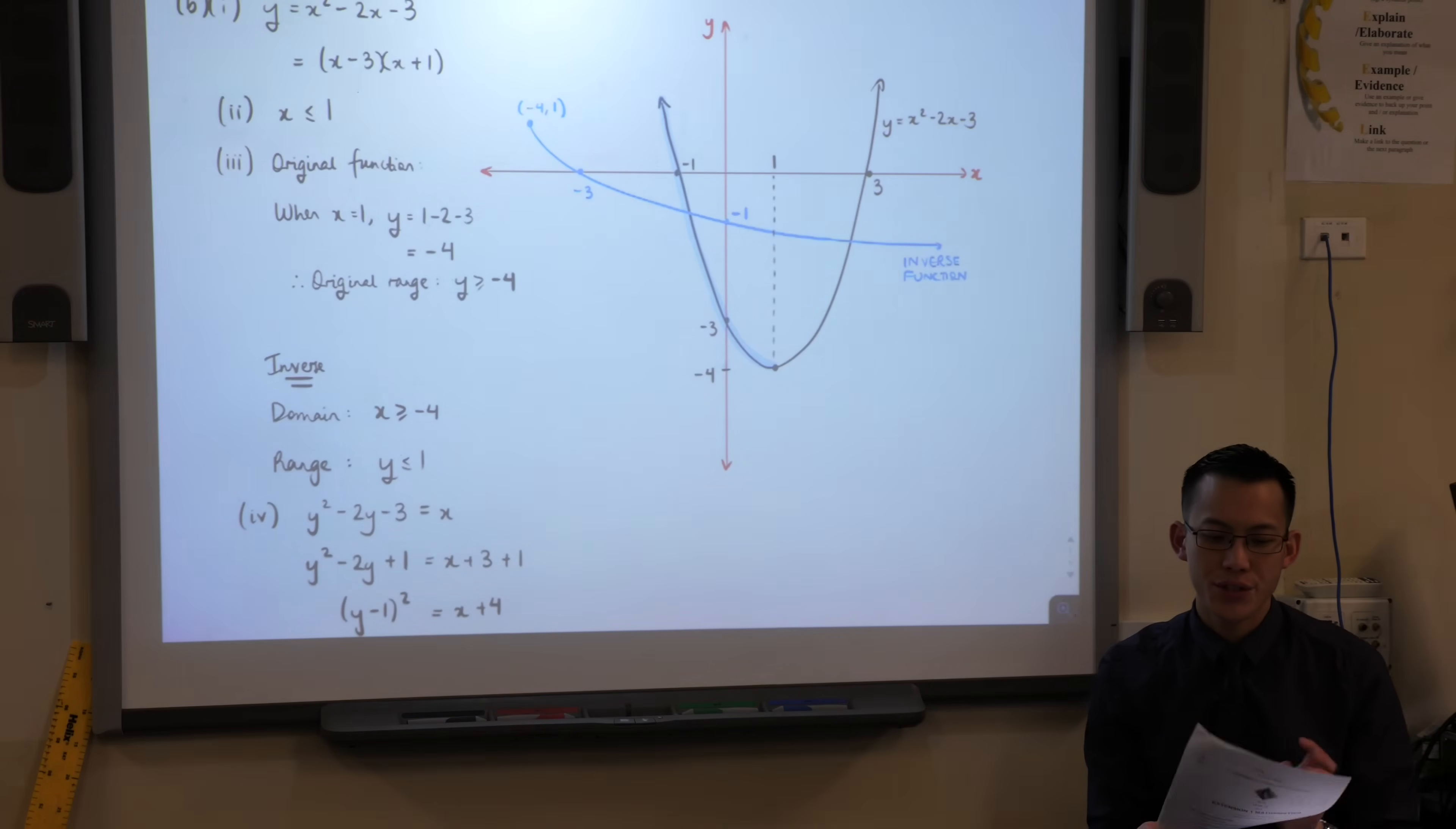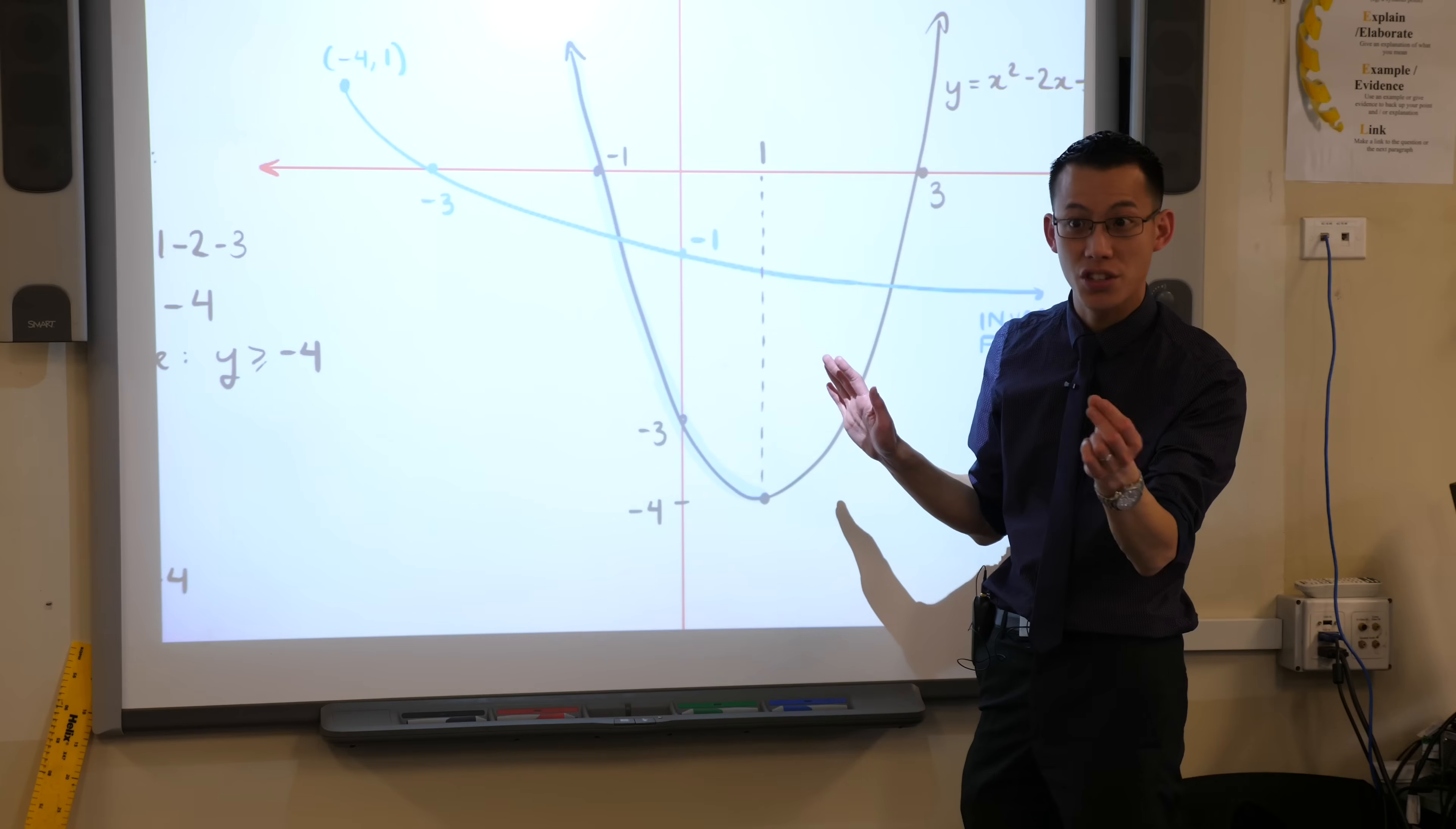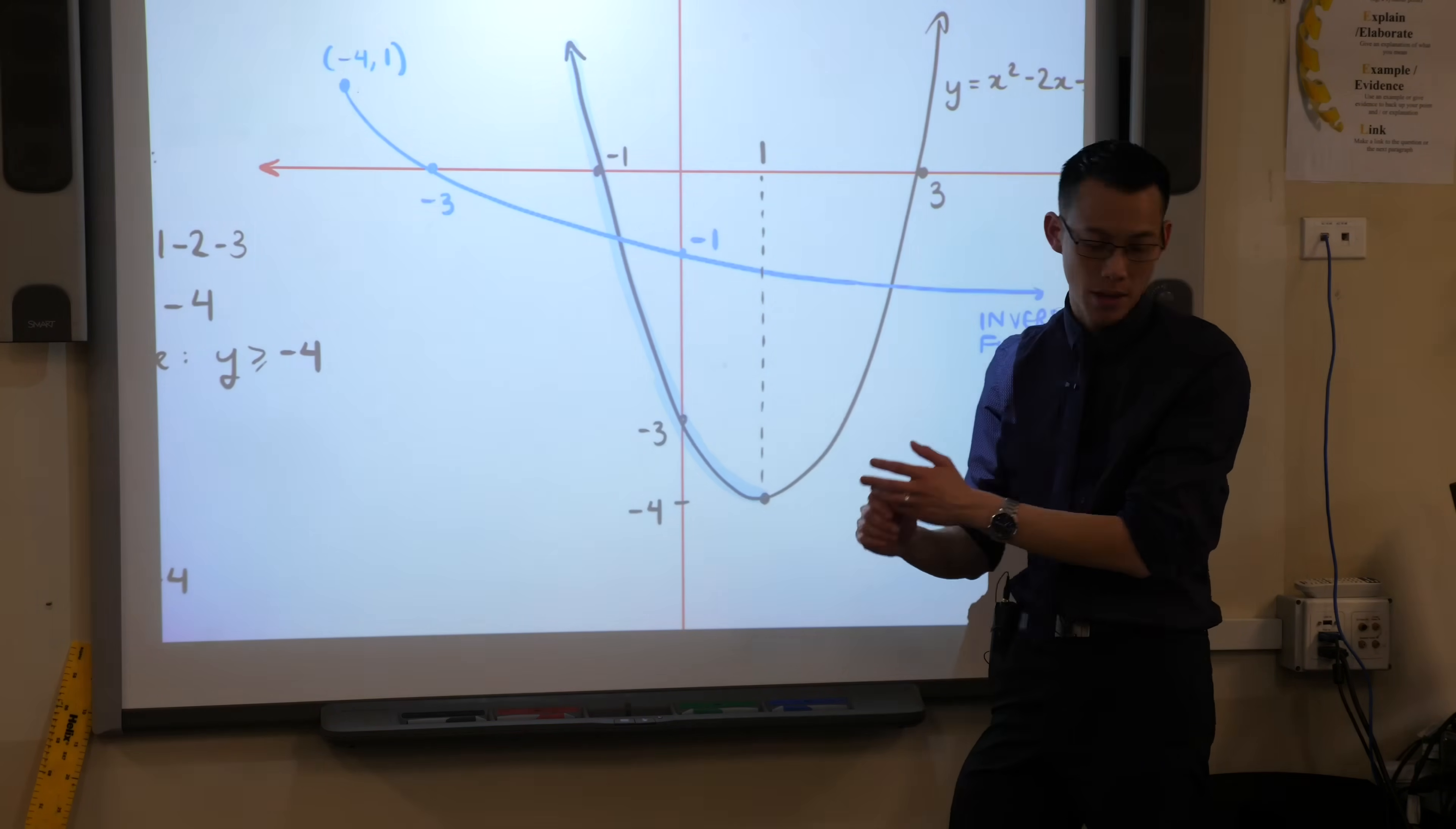Part two. Find the largest domain containing x equals zero for which the inverse function exists. So you can see I've highlighted this in blue over here. This has a stationary point in it. So I know I have to restrict the domain in some way. I can only pick one half or the other in order to get an inverse function out of this. So why have I chosen the left-hand side rather than the right-hand side? Look at the question. The question doesn't give you that much information. What does it tell you? Find the largest domain containing x equals zero. Here's x equals zero in here. So I need this part of the graph, which means you must have this left-hand part.